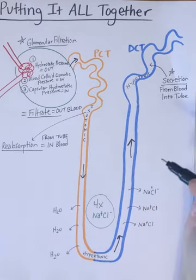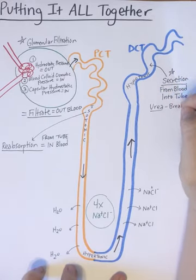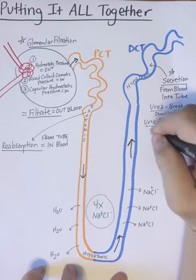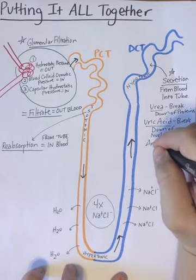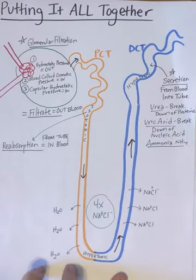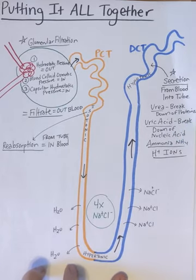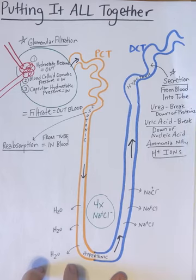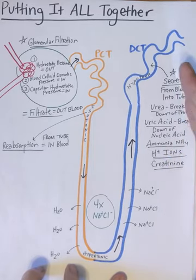When we talk about secretion, the things we are going to secrete include: urea, which is the breakdown of proteins; uric acid, which is the breakdown of nucleic acids; ammonia, which is either NH4 or NH3 and is a waste product; hydrogen ions, which are acidic; and creatinine, which is another waste product. So these are all secreted into our urine.